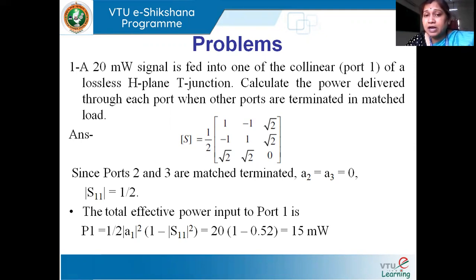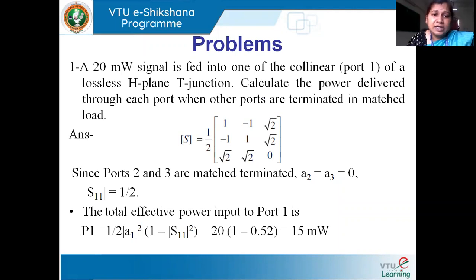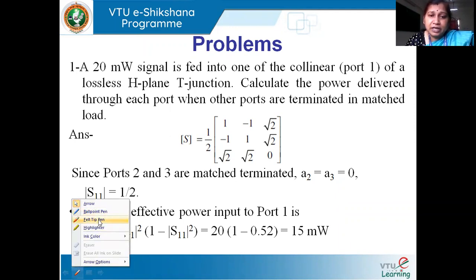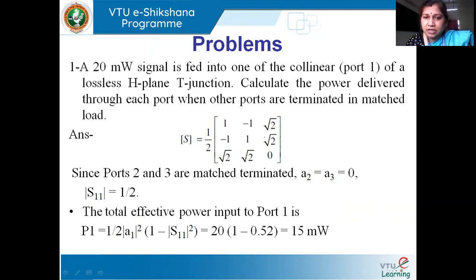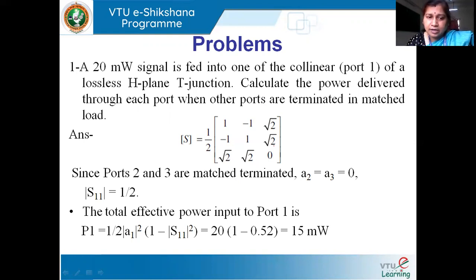When we are considering the power at one port, we have to assume that the other two ports are matched terminated — terminated with some matched impedance. Since ports two and three are matched terminated, A2 and A3 are going to be zero. This is the S-matrix of the H-plane T, which we have already derived based on the properties of the H-plane T-junction. It is a 3×3 matrix.